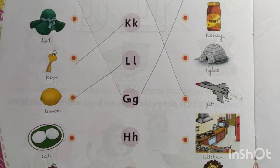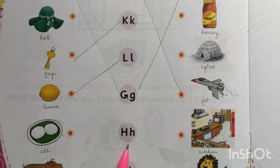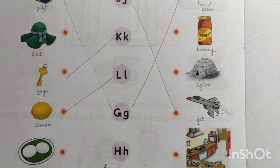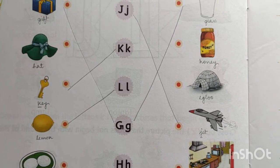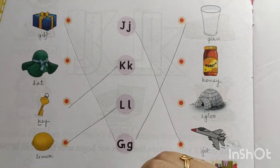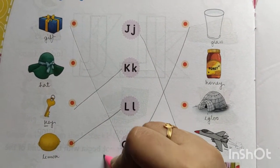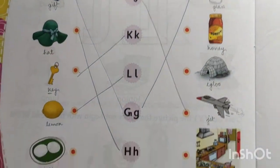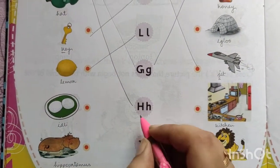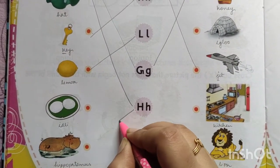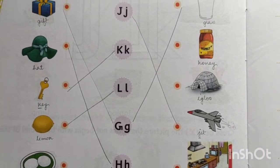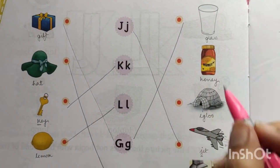Next is H — find pictures starting with letter H. Yes, hat — the line goes to H. And here you can see hippopotamus, and also honey — all starting with H.